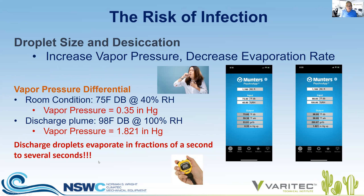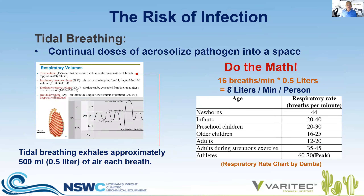Consequently, discharged droplets evaporate in fractions of a second to several seconds, depending on the size of the droplets expressed. Anybody who is sick and just breathing normally — without talking, coughing, or sneezing — has a tidal breathing volume of about half a liter per breath at about 16 breaths per minute, which is 8 liters per minute per person. In a drier environment, those smaller droplets will be aerosolized very quickly, and aerosolized droplet nuclei or viral nuclei will increase the concentration of aerosolized virus in the space.